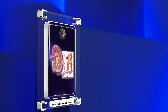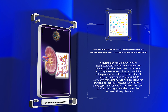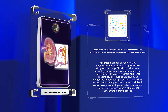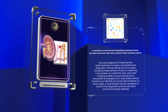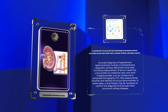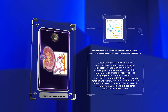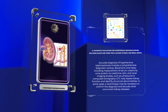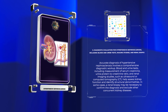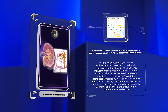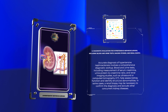Accurate diagnosis of hypertensive nephrosclerosis involves a comprehensive diagnostic workup. Blood and urine tests, including measurement of serum creatinine and urine protein-to-creatinine ratio, and renal imaging studies such as ultrasound or computed tomography (CT), help assess kidney function and identify structural abnormalities. In some cases, a renal biopsy may be necessary to confirm the diagnosis and exclude other concurrent kidney diseases.